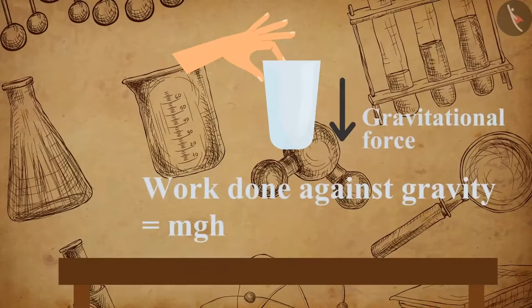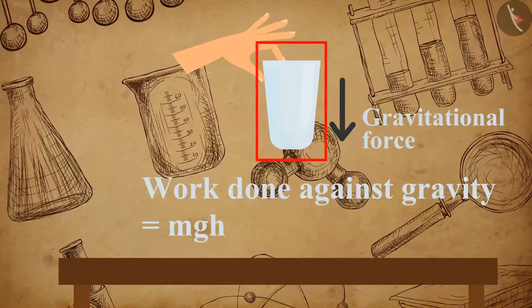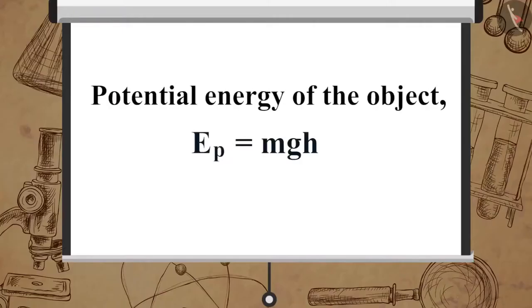As the work done on the object against gravity is Mgh, so the energy gained by the object is Mgh, which is the potential energy of the object. Therefore, potential energy of the object EP is equal to Mgh.